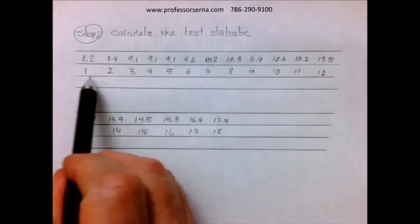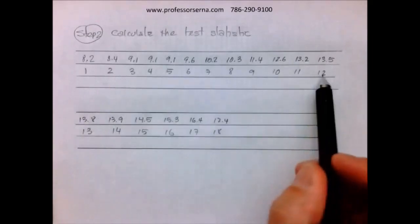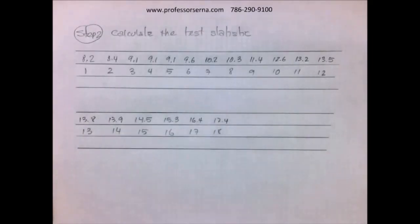We have 18 of them. And here on the second row, we are going to put the numbers from one all the way to 18. But now we have to take care of ties if we have any.